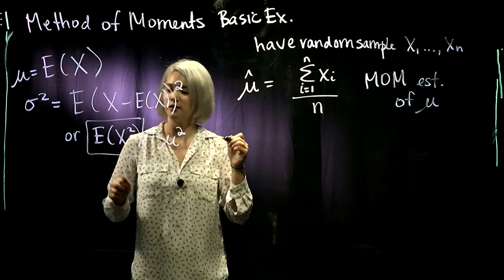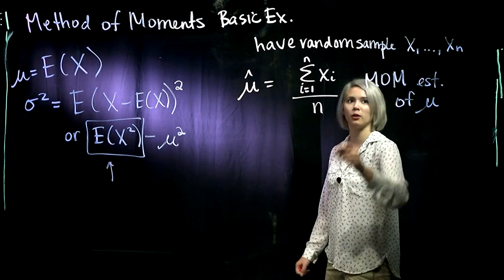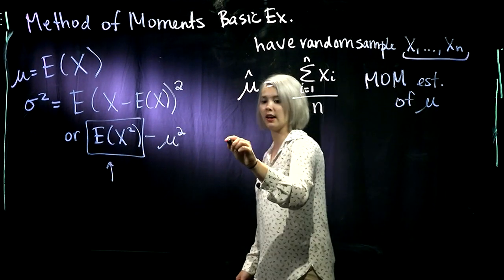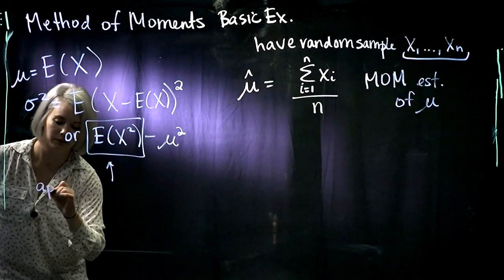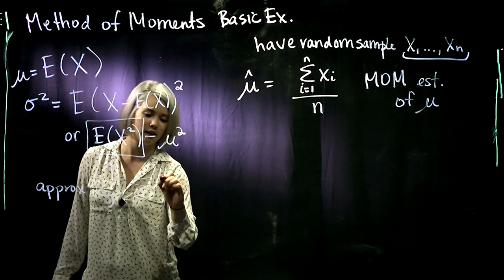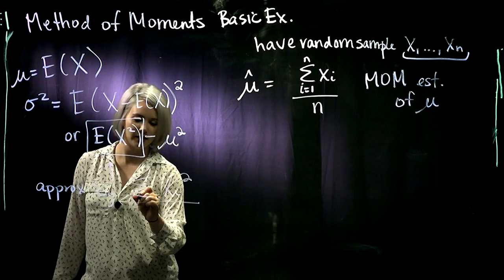So we're looking for expectation of X². We have this random sample x₁ through xₙ. And we know that we can approximate this with the sum of the xᵢ² and divide by the sample size.